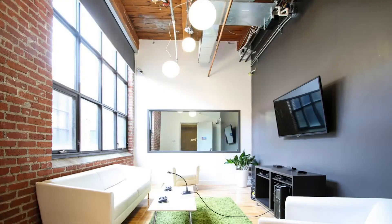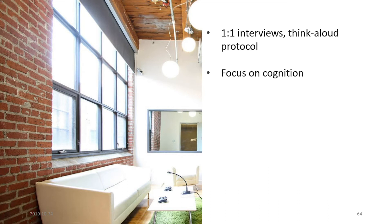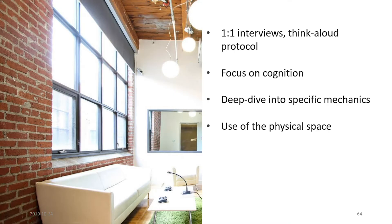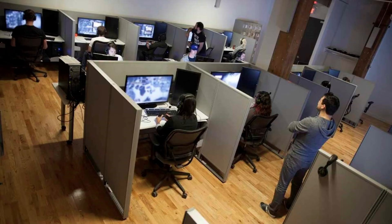This is our usability lab. We have a couch with a one-way mirror and a TV mounted on the wall, simulating a living room setup. This room allows us to do one-on-one interviews following a think-aloud protocol, where participants speak out loud for the entire duration of the session. This lets us gauge their understanding and dive deep into specific aspects, including how they use the physical space — for example, how they use the controllers, since an adult uses a controller differently than a child.